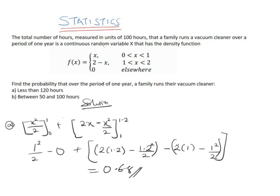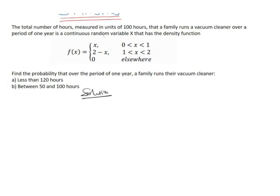Therefore, the part B, I'm told to find the probability that the vacuum cleaner runs in one year between 50 and 100 hours. This is probability of x is between 0.5 to 1, that's 0.5 less than x and less than 1.